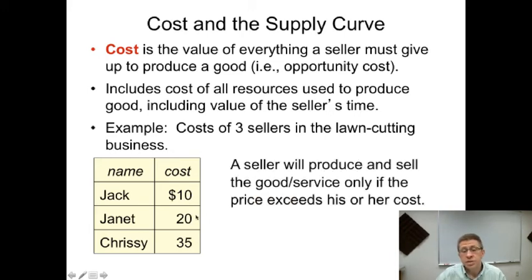Another twenty and another thirty-five. Well, what would induce somebody to sell his or her service? Yeah, anytime that you can get more than the minimum willingness to accept, or the minimum cost. Right, Jack's cost is ten. So you start to offer ten or more, Jack will be willing to sell the service.